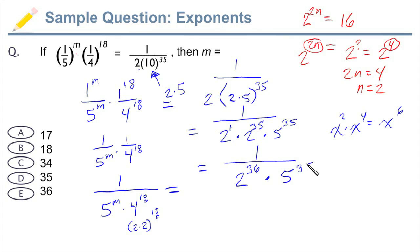Times 5 to the 35. Okay, now we're close, right? 1 over 5 to the m, that's 5 to the 35, times 4 to the 18. Hmm, we don't quite have 4 to the 18. But remember what I said up here. Find the same base.